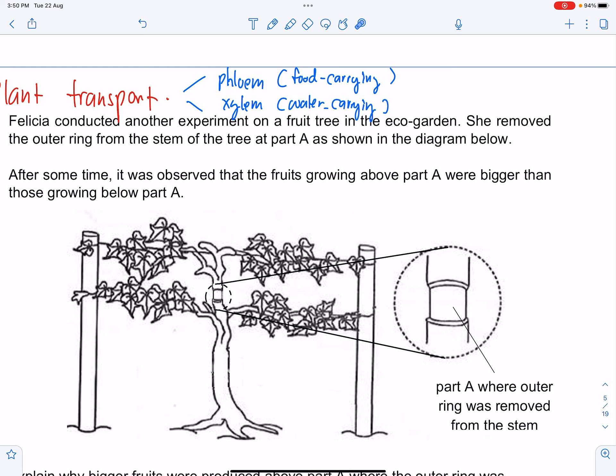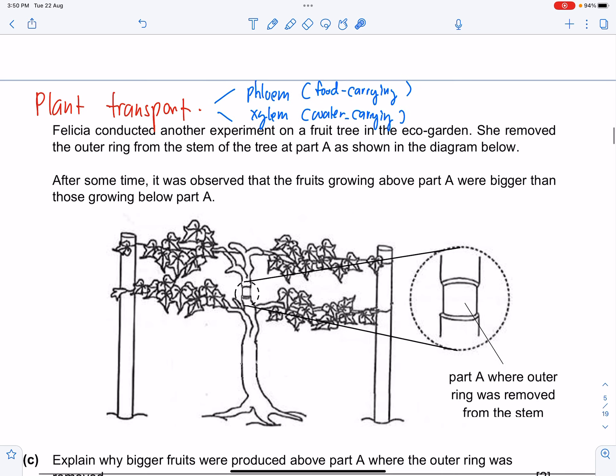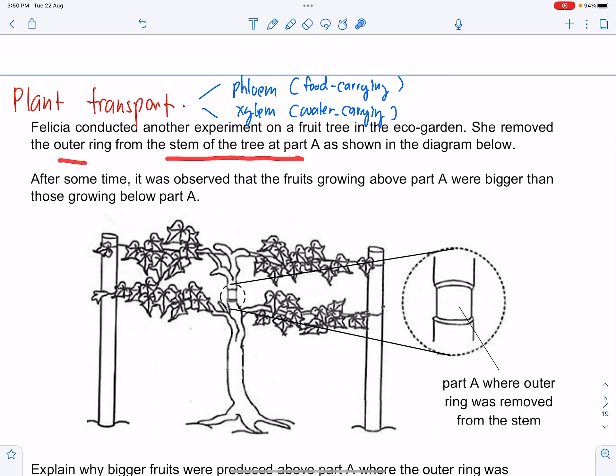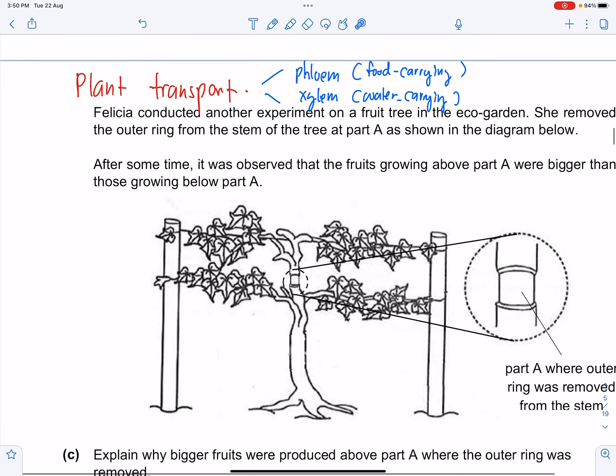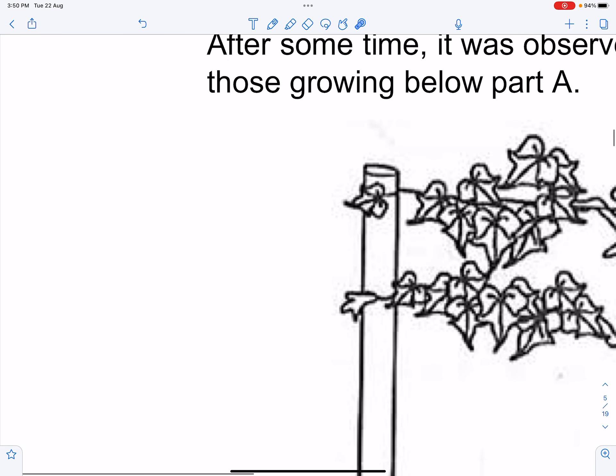Felicia conducted another experiment on a fruit tree in the eco-garden. She removed the outer ring from the stem of the tree as shown in the diagram below. So why outer ring?